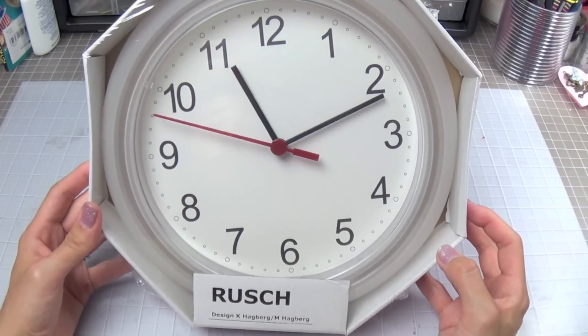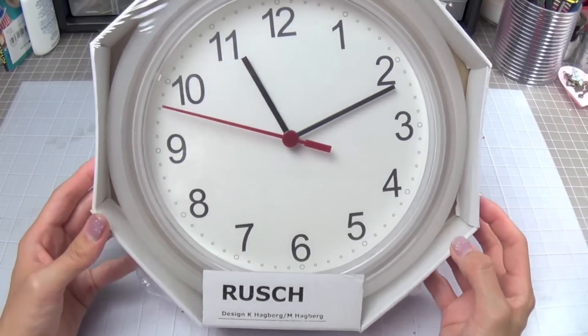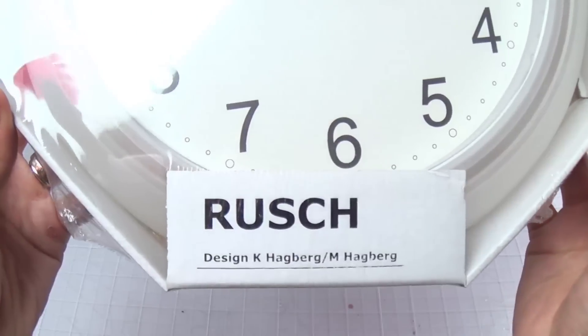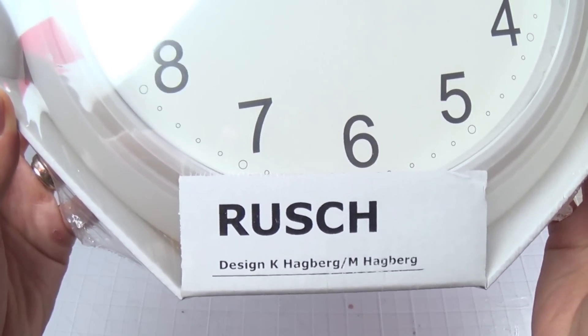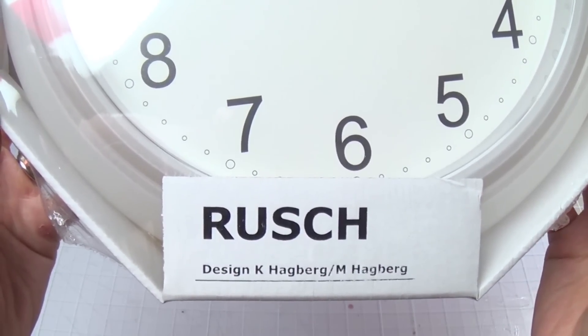The clock I will be hacking is called Rusk or Rush. I'm not quite sure how to pronounce it, but it is from IKEA and I got it for $1.99 here in the U.S.